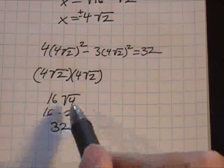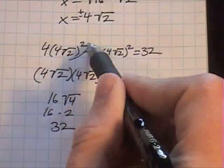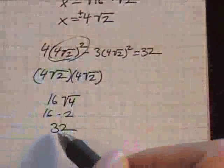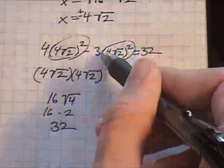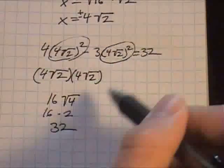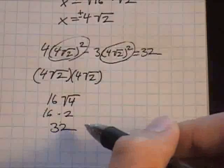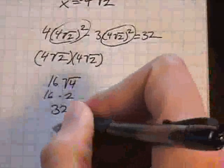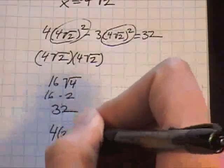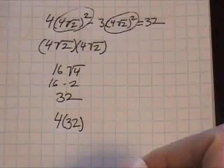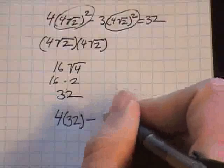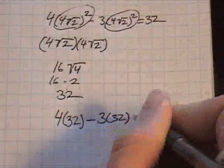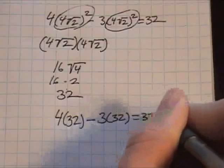16 times 2 equals 32. So, we know now what this term right here is. That's 32. If you look over here, that's the same term. So, we can just substitute the 32. So, it is 4 times 32 minus 3 times 32 equals 32.